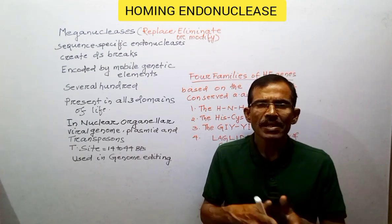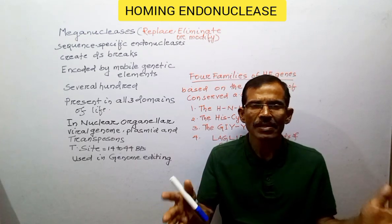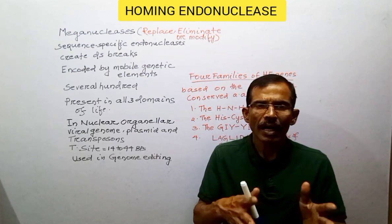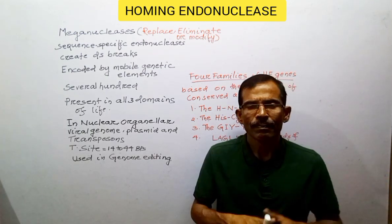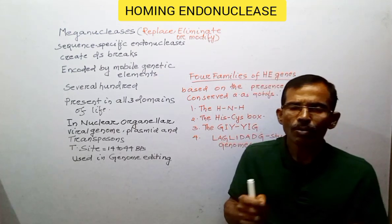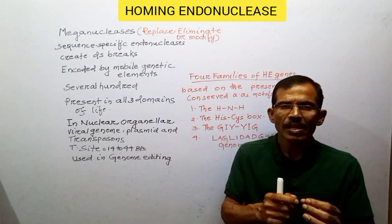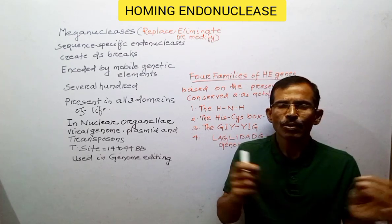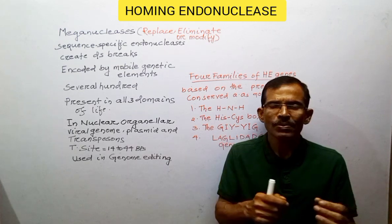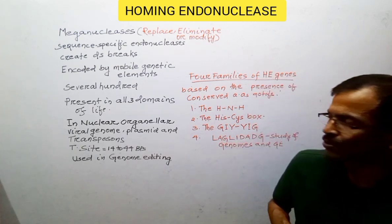These enzymes are present in all three domains of life such as the archaea, bacteria, and the eukaryota. Meganucleases have exploited all possible genetic loci by locating themselves in the nuclear, organellar, and viral genomes and also in plasmids and transposons.